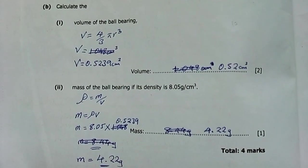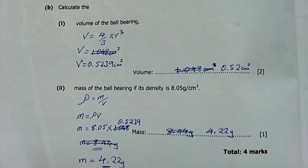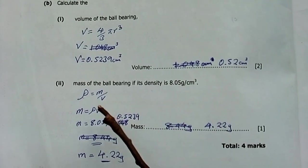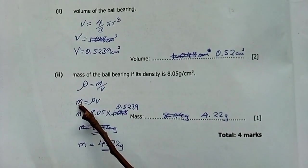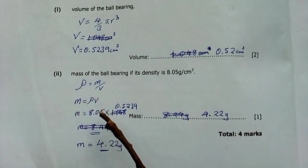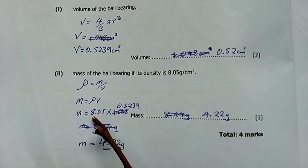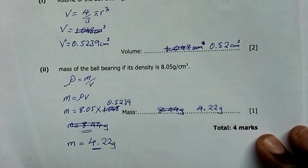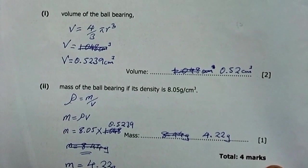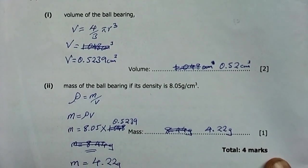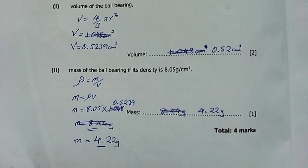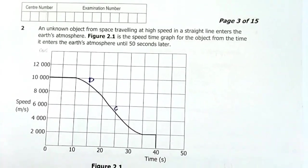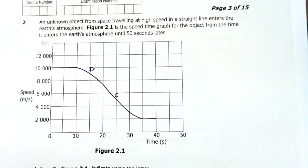The mass of the ball bearing: if the density is 0.05 grams per cubic centimeter, the formula for density gives us mass equals density multiplied by volume. The final answer comes out as 4.22 grams, and we have our four marks for the first question.